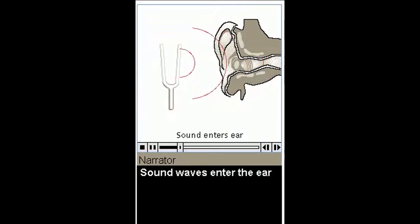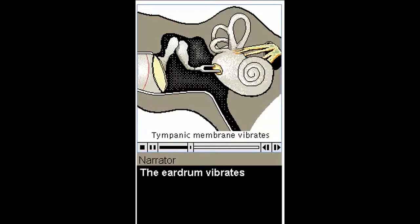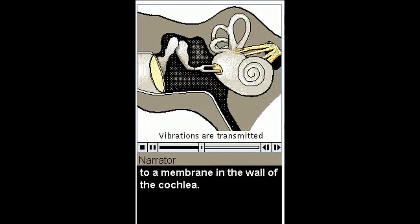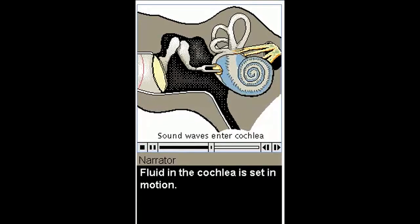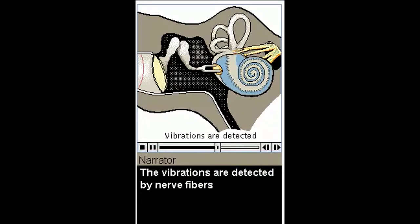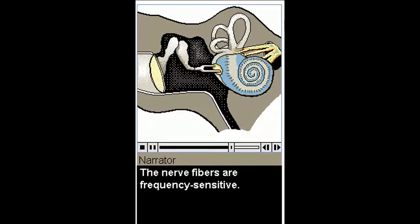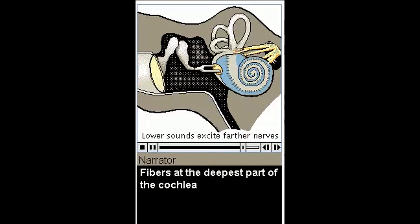Sound waves enter the ear, causing changes in air pressure in the auditory canal. The eardrum vibrates, and the waves are amplified and transmitted by the middle ear to a membrane in the wall of the cochlea. Fluid in the cochlea is set in motion. The vibrations are detected by nerve fibers, and these fibers transmit signals to the brain through the auditory nerve. The nerve fibers are frequency sensitive. Fibers at the deepest part of the cochlea detect the lowest frequencies, and fibers at the other end of the cochlea detect the highest frequencies.